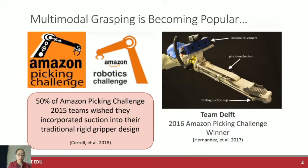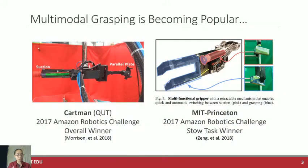Most notably, in 2016, the second challenge, team Delft used a combination suction pinch mechanism. And then in 2017, the winners either used suction and parallel plate as totally distinct objects or in a more integrated approach, as we see from the MIT Princeton team.